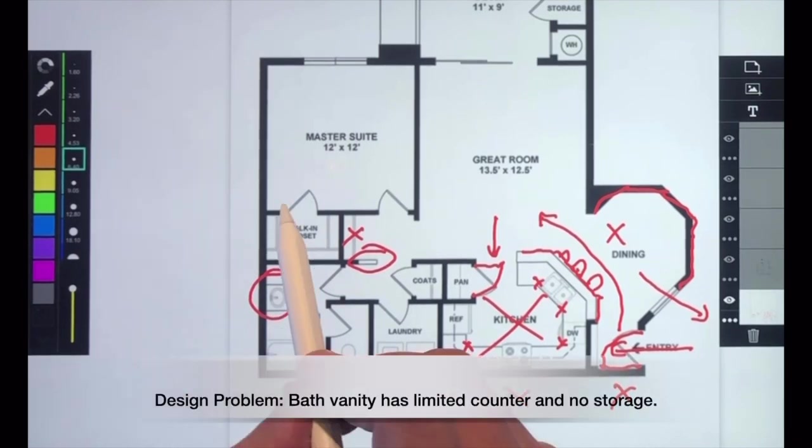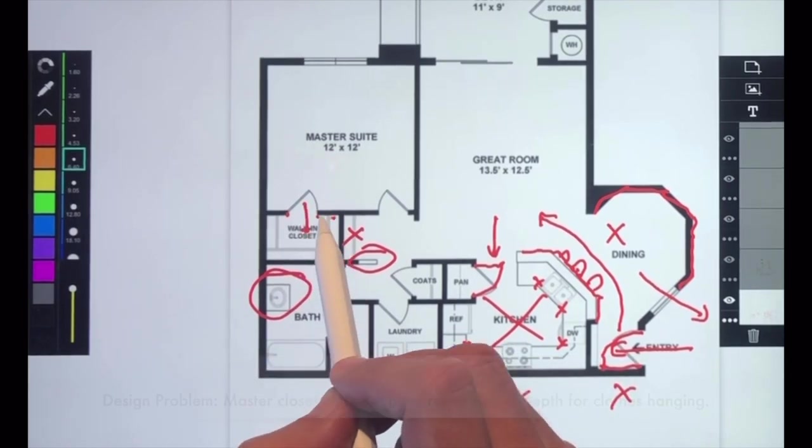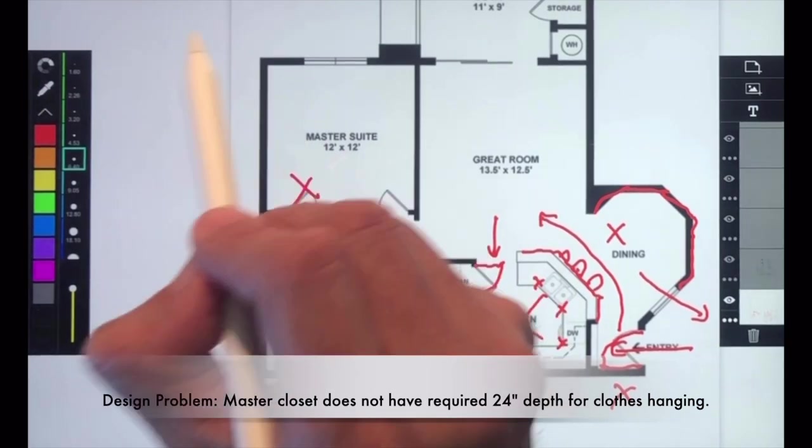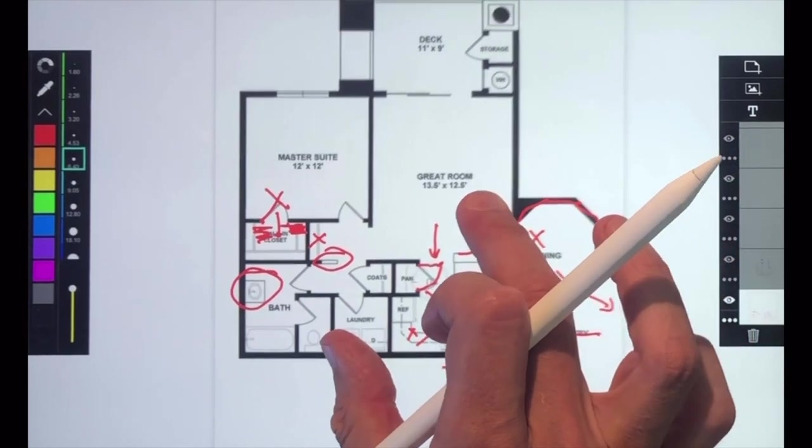The master closet also does not have enough width. Your clothes are going to stick out into the swing of the door and I don't like when the doors swing into the master suite because it could obstruct with the bed or the night table. So, we have all sorts of things to correct.